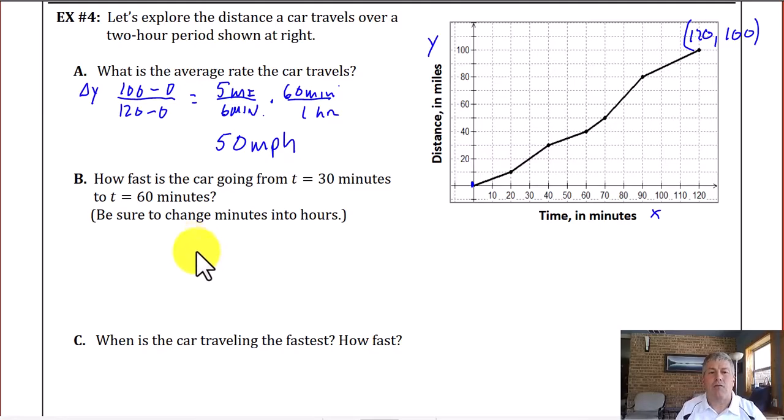Question B asks us to find out how fast the car is going from time equals 30 minutes to time equals 60 minutes. So it would be helpful to have those particular ordered pairs. And at t equals 30, our ordered pair is 30 and our y value, our distance is 20. And at t equals 60, our ordered pair, our x is 60 and our y is 40.